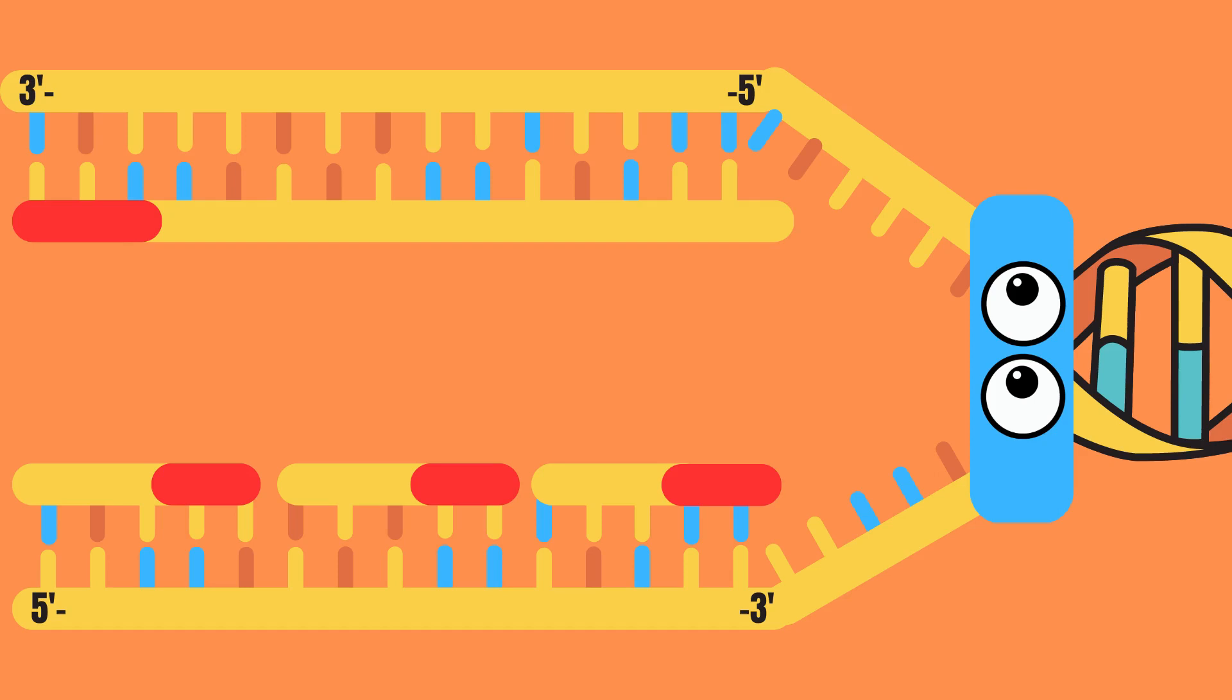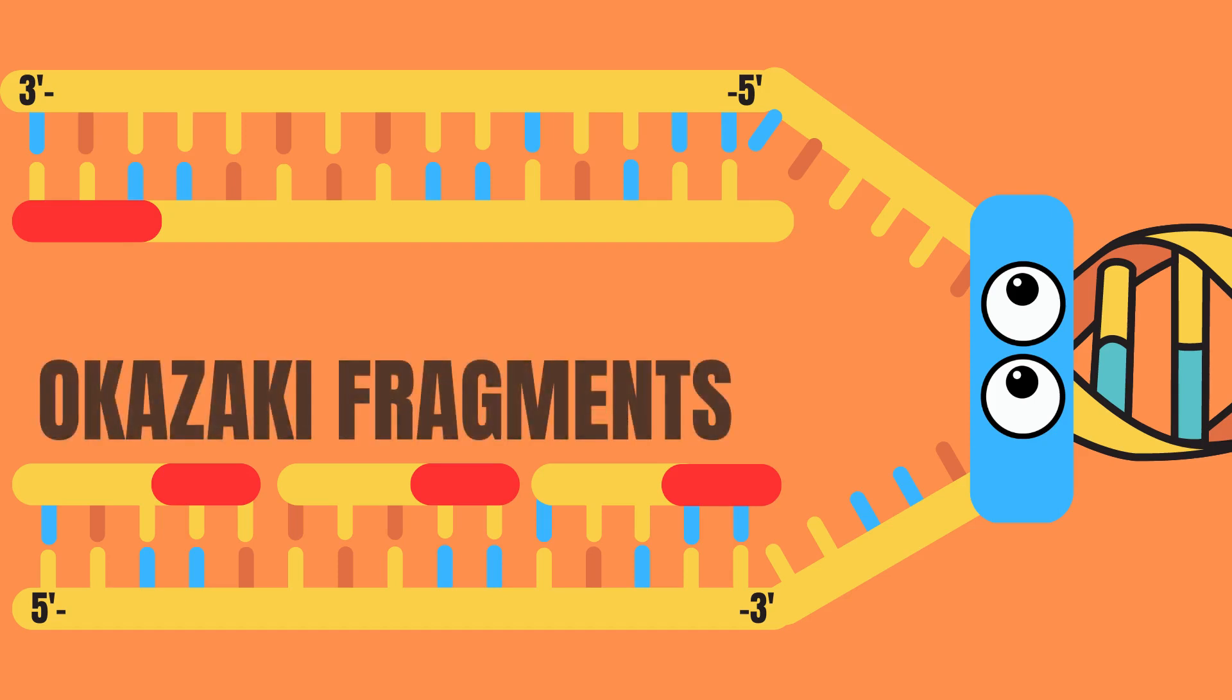Now all of this is happening simultaneously as the helicase is unzipping the double helix. Therefore the DNA polymerase on the 5' to 3' strand has to do it in increments creating so-called Okazaki fragments while the leading strand can do it in one go.